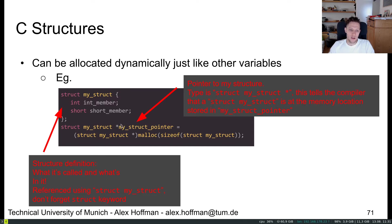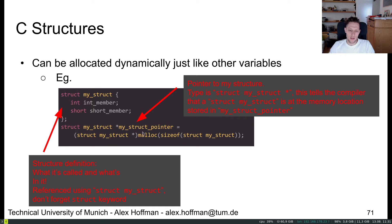We can take a pointer to a structure. It's the same as any other pointer — the data type in front of the asterisk says 'I store a memory address, and whatever I'm pointing to is of this type.' This tells us the size, so whatever is at the memory address stored in my struct pointer is going to be of size struct my_struct — in this case six bytes, because an int is four and a short is two. To allocate it, we use malloc with sizeof(struct my_struct), which is six bytes, and save the returned memory address into the struct pointer.